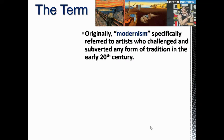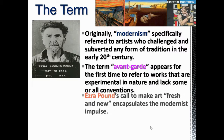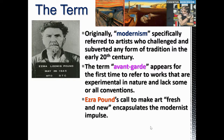Originally, modernism specifically refers to artists who challenged and subverted any form of traditional art in the early 20th century. The term avant-garde appears for the first time to refer to works that are experimental in nature and lack some, if not all, conventions. If you want to blame someone for modern art, a great candidate is Ezra Pound, because he called for art to be fresh and new.